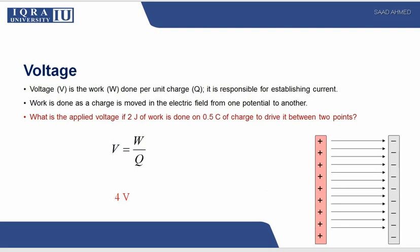Voltage is the work done per unit charge. It is responsible for establishing current. Without voltage there cannot be any current. This is the main thing. V is for voltage, W is for work done, and Q is for charge. Work is done as charge is moved in an electric field from one potential to another potential. You can say that the potential difference between two points in a circuit is called voltage.